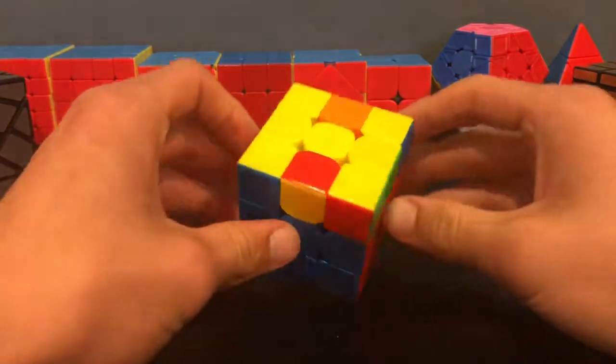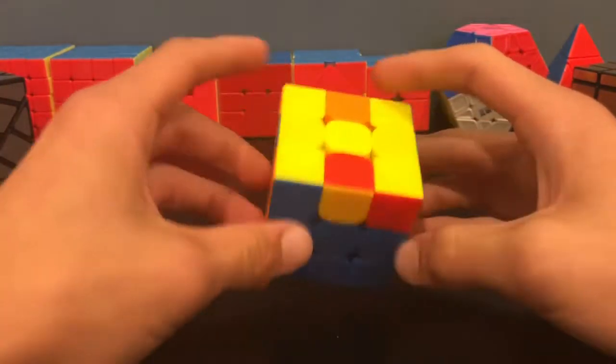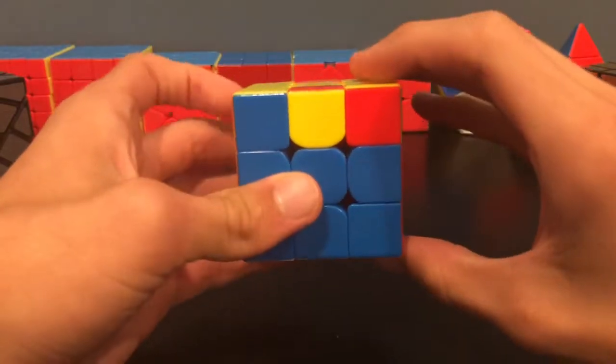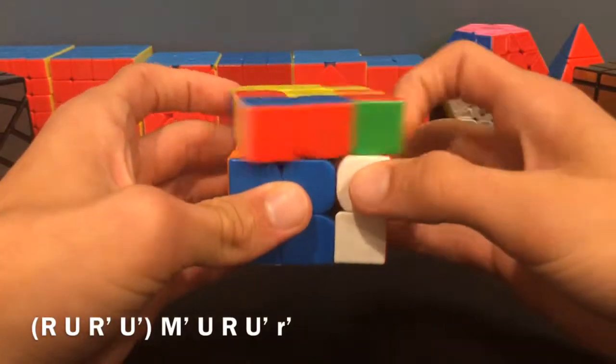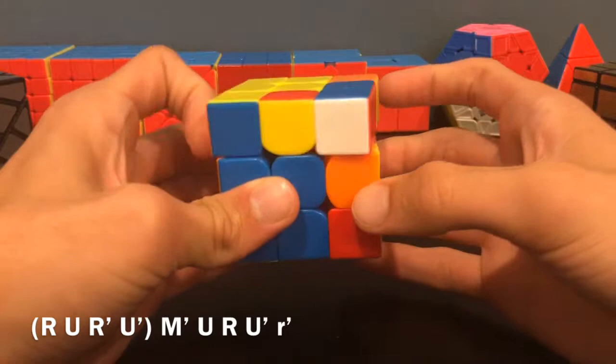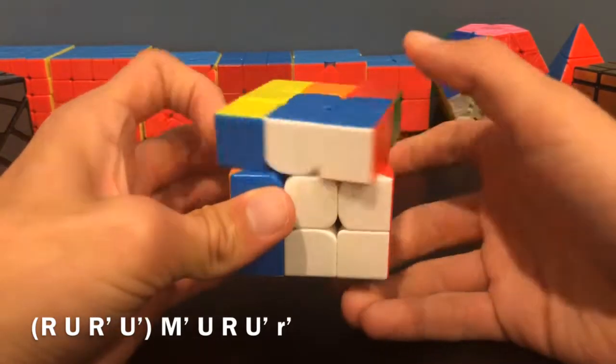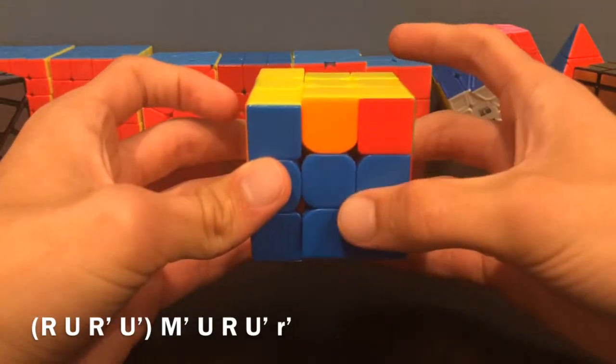Here's the line algorithm for when all corners are already oriented. So you'll hold it with the two that need to flip vertically and do this algorithm: R U R' U' M' U R U' R wide prime.